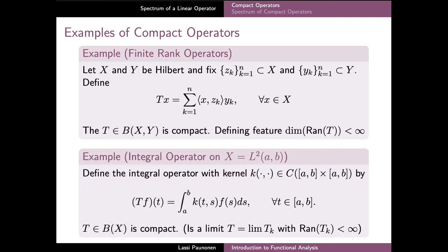As our second example we can take a look at the integral operator with a kernel k. We already saw that the operator T defined in this way is linear and bounded, and it is also possible to show that T is in fact compact. Since we consider T on the Hilbert space L2, T is a limit in the operator norm of a sequence of operators with finite dimensional ranges, which are all compact due to our first example, and as a limit in the operator topology T is compact as well.